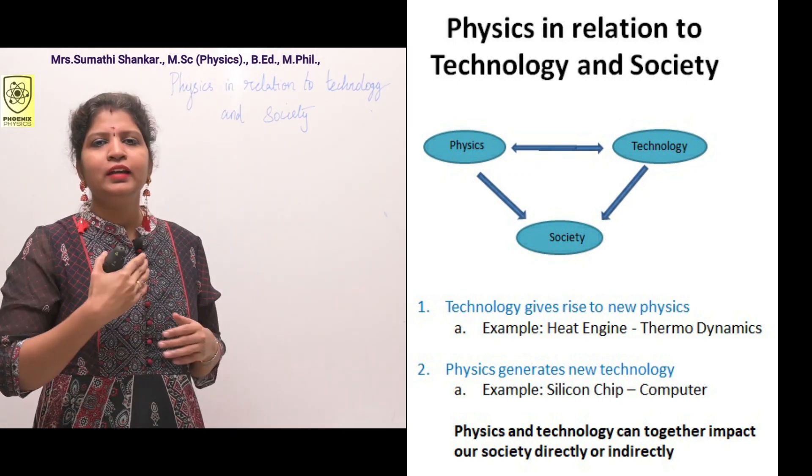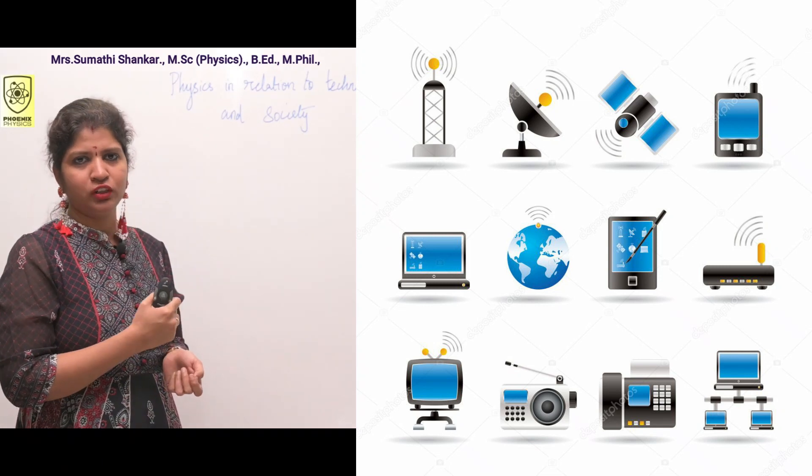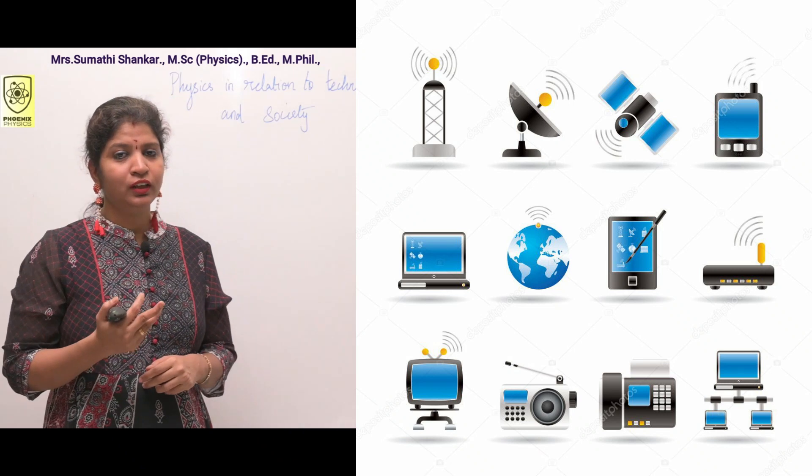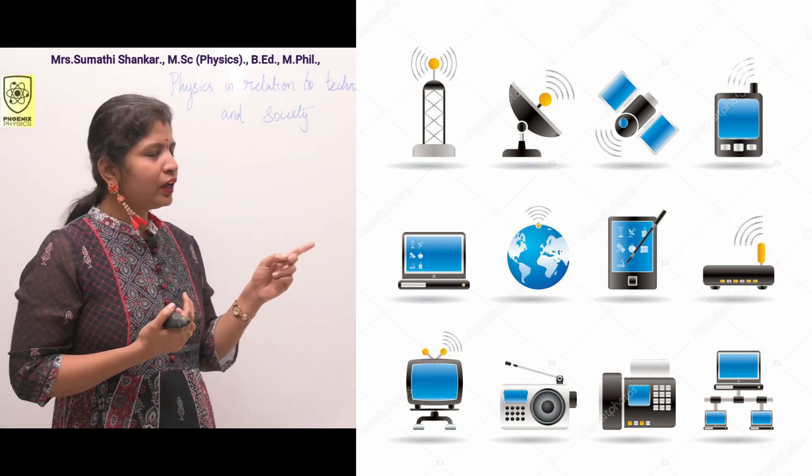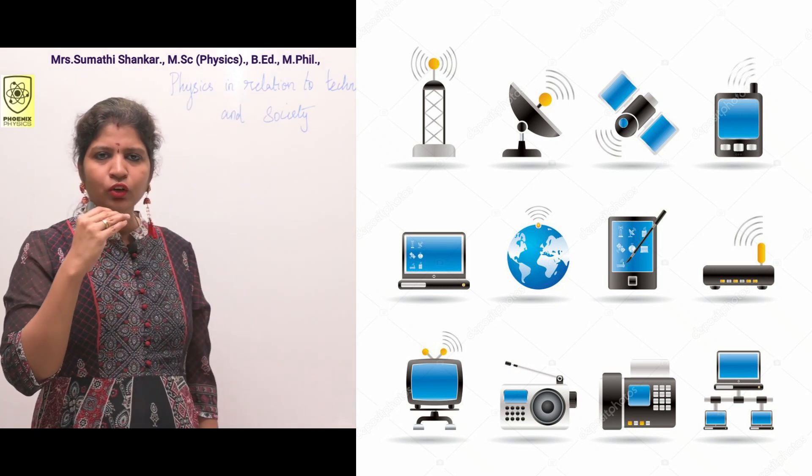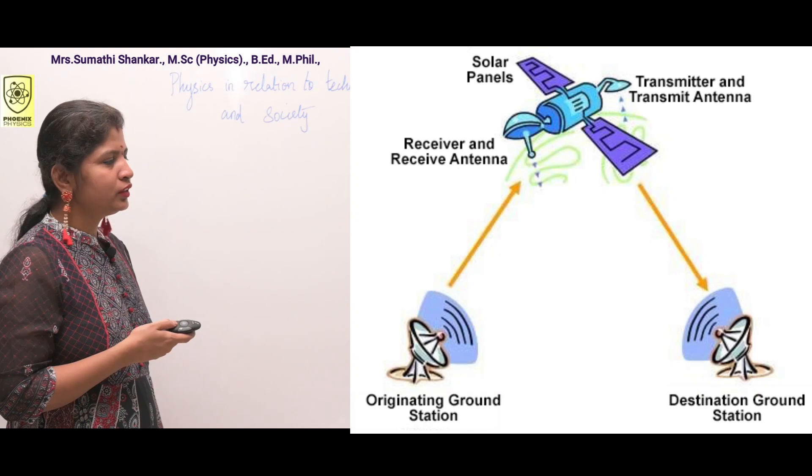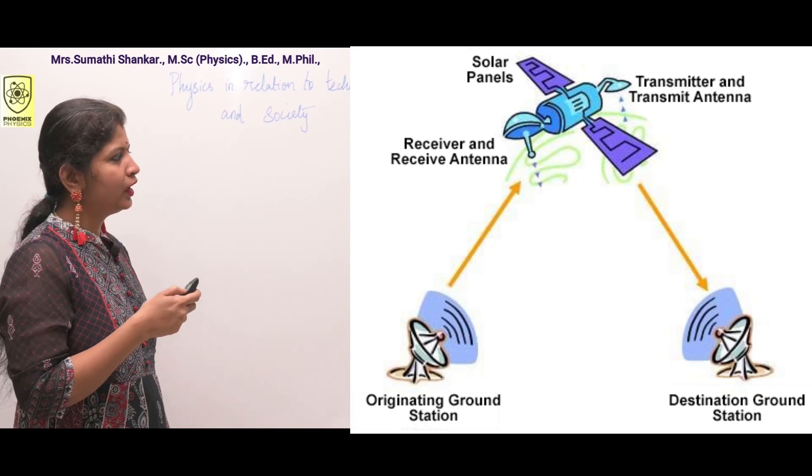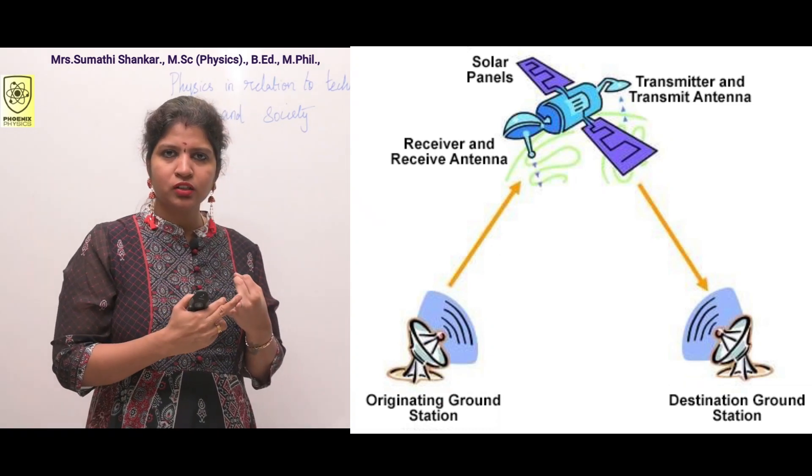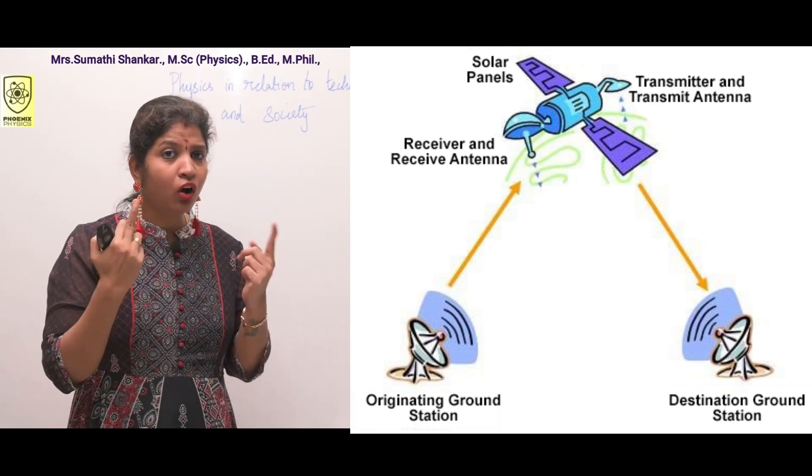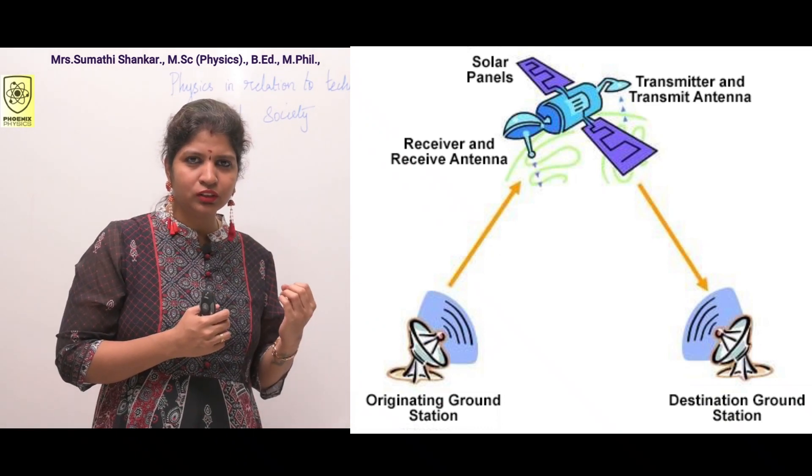Physics and technology are interrelated and can together impact our society either directly or indirectly. Let's discuss some examples. First is wireless communication technology. We all have smartphones working with Wi-Fi, a wireless communication technology based on basic laws of electricity and magnetism. Next, launching of satellites revolutionized our communication. TV broadcasting, radio broadcasting, navigation, communication, research - all use satellite communication.